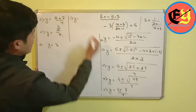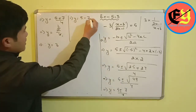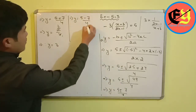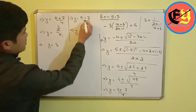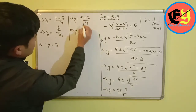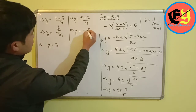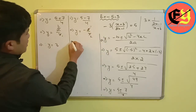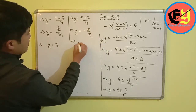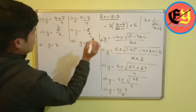For y equals 5 minus 7, that gives minus 2 by 4, which simplifies to y equals minus 1 upon 2.